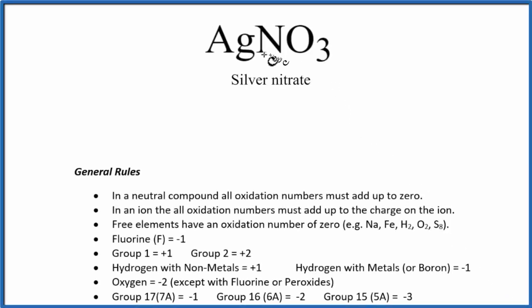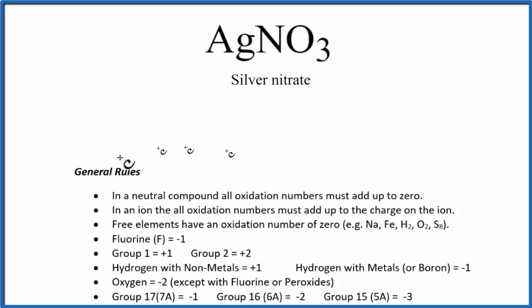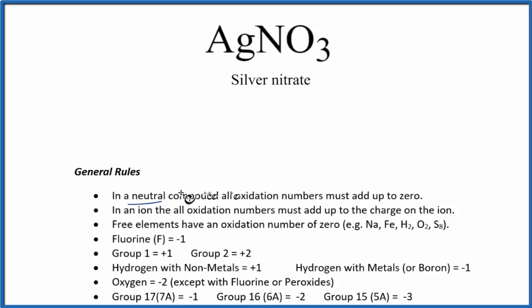To find the oxidation numbers for AgNO₃, each element in AgNO₃ — silver nitrate, sometimes called silver(I) nitrate — we'll use these general rules. The first thing is that silver nitrate doesn't have a plus or minus sign like we would with ions. Silver nitrate is neutral, so all the oxidation numbers add up to zero.